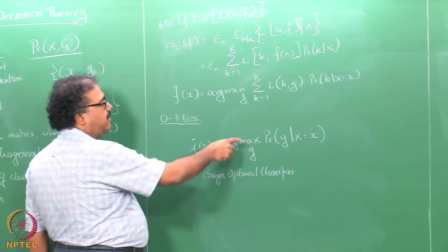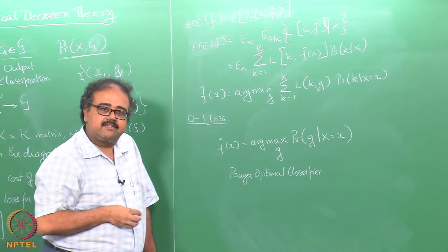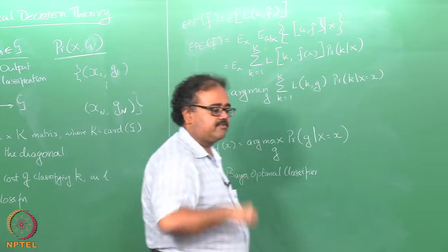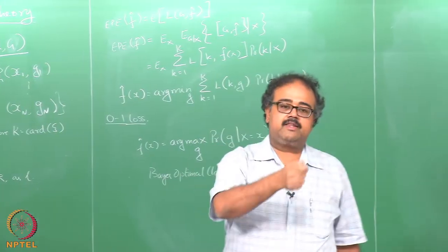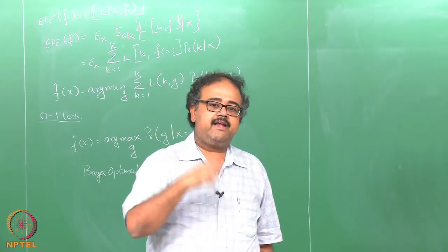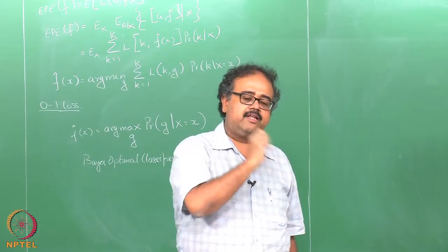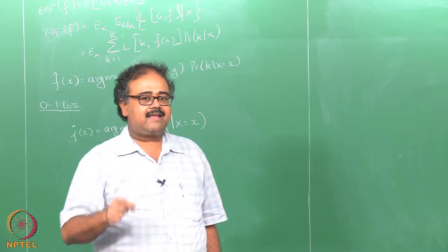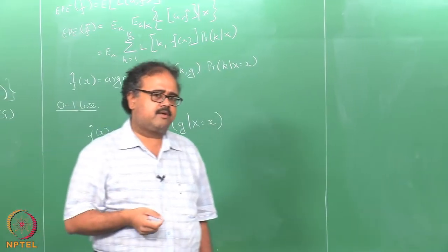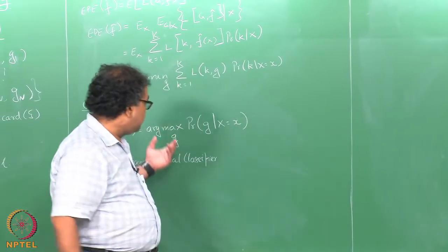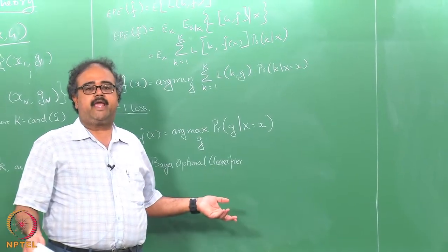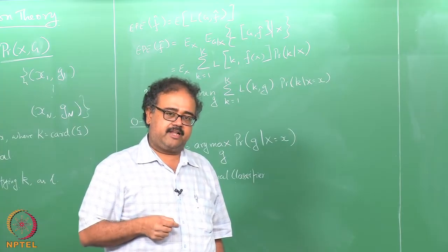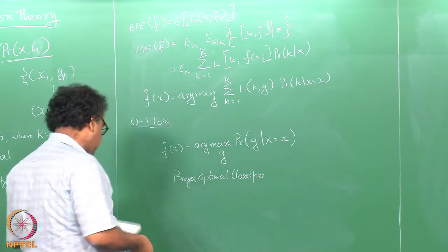How would you estimate this probability? We know how to do nearest neighbor. What you would do in this case — instead of taking the average over the neighbors like in the regression case — is estimate the probabilities in the neighborhood. Take a data point, look at its K nearest neighbors, find out what their class labels are, and for each label count the number of occurrences in the K neighbors and divide by K. This gives you the probability of each class label in the neighborhood. But we really do not have to do this much work because we only need the one with maximum probability.